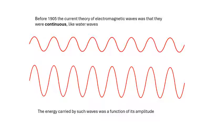People thought that if a wave had more energy, that related to its amplitude — like a water wave with a bigger amplitude has more energy. Light waves were thought to behave similarly. But now we know differently.